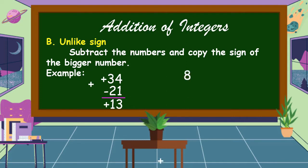Another example: 8 plus negative 16. 8 is positive and 16 is negative, so we subtract. 16 minus 8 gives an answer of 8, and the sign of the bigger number is negative. So our answer is negative 8.